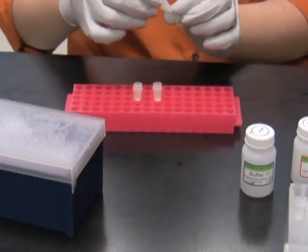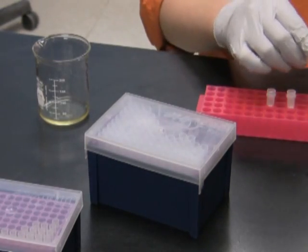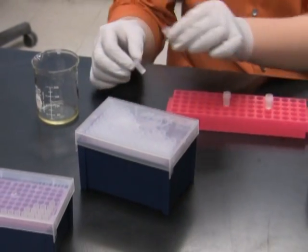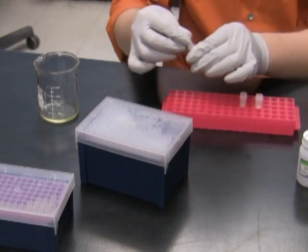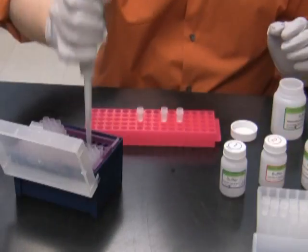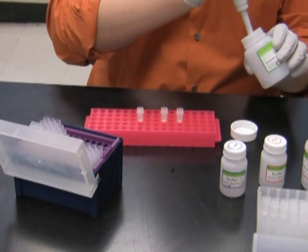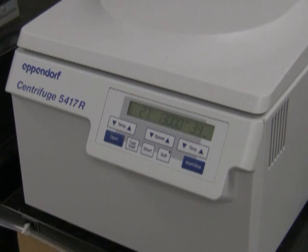Then I discard the flow through and add a wash buffer with ethanol to the columns. Then I spin in the centrifuge again.